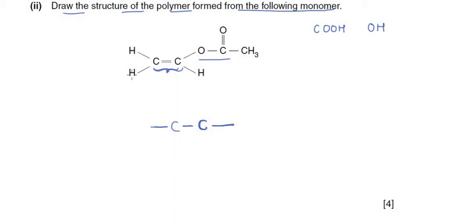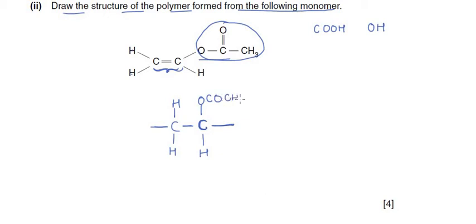The first carbon carries two hydrogen atoms. The second carbon carries one hydrogen and the ester group: O bonded to the carbon, then CO, then CH3. This completes the polymer repeating unit. Marks are awarded for the correct repeating unit and for drawing the extended bonds on both sides.